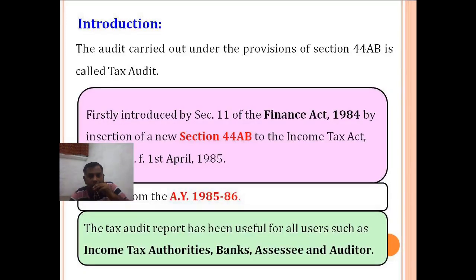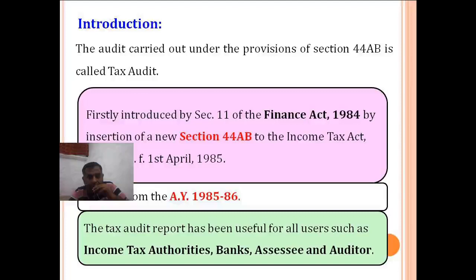The audit carried out under the provisions of Section 44AB is called tax audit. It was first introduced by Section 11 of the Finance Act 1984 and newly introduced in Section 44AB from 1985. The tax audit report has been useful for all users such as tax authorities, banks, as well as auditors.